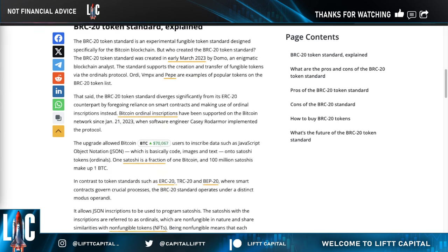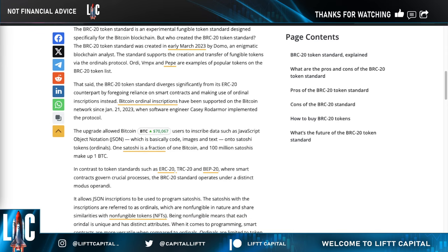These inscriptions have been supported since the beginning of this year. What this upgrade really allowed is for developers and users to inscribe data onto satoshis, or ordinals — so they can put code, images, or text on each one of those satoshis. Each satoshi is basically a fraction of one Bitcoin, and 100 million satoshis make up one BTC.